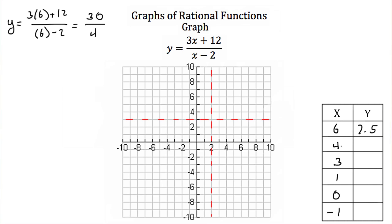Next we plug in 4 for x. So we'll have y equals 3 times 4 plus 12 all over 4 minus 2. Now 3 times 4 is 12. 12 plus 12 is 24, 4 minus 2 is 2. So when x is 4, our y value is 12.